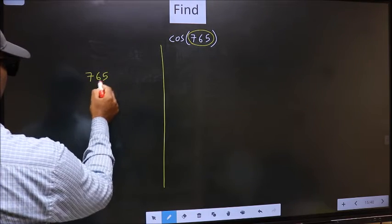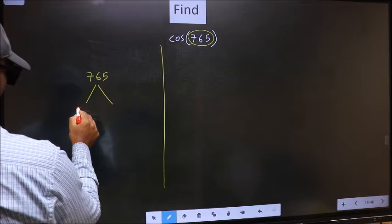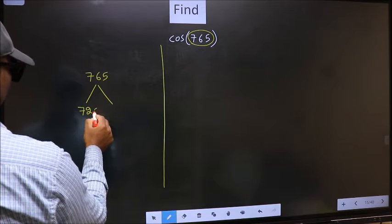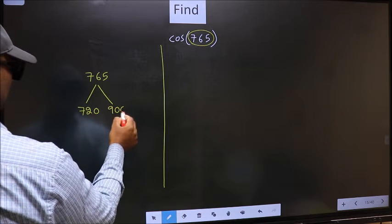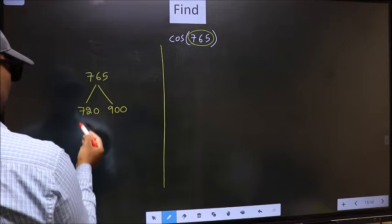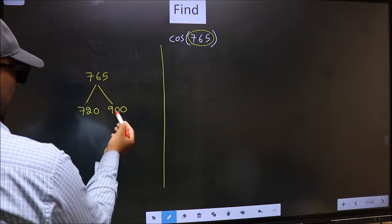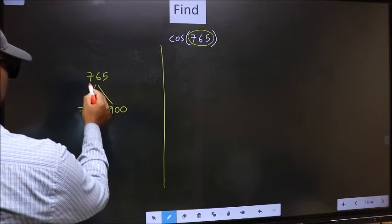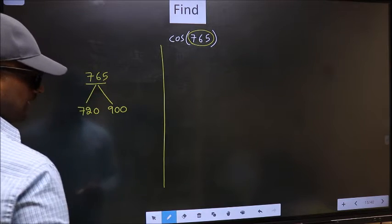765 lies between 720 and 900. This is 180 into 4, this is 180 into 5. Between these two numbers, 765 lies.